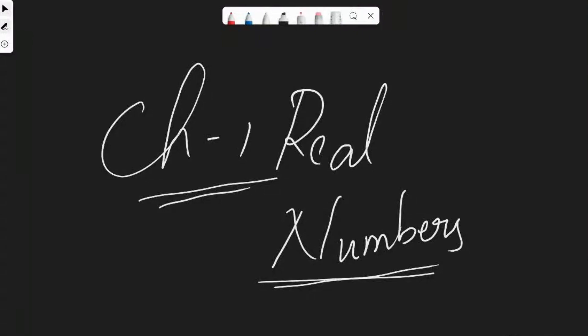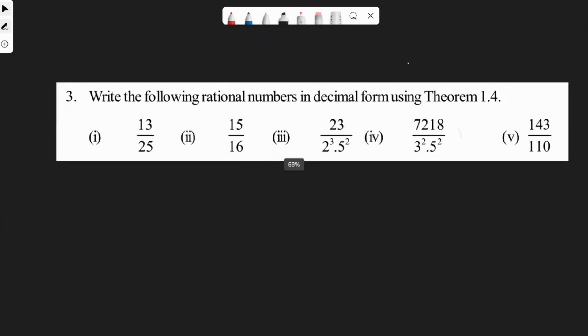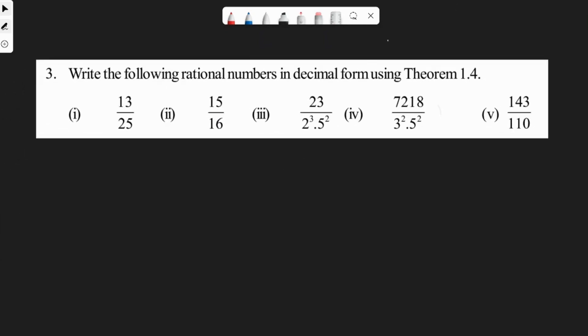Hi guys, Sagar here. Today we have the next sum, which is the third sum of Exercise 1.3: write the following rational numbers in decimal form using Theorem 1.4. Theorem 1.4 is writing the denominator as 2 into 5 whole power m, so that 2 into 5 is 10, and 10 whole power m we can divide easily. Let's take the first example and you will understand.